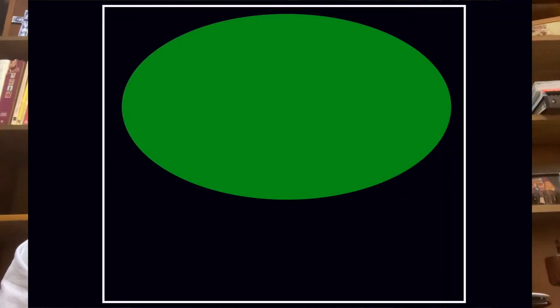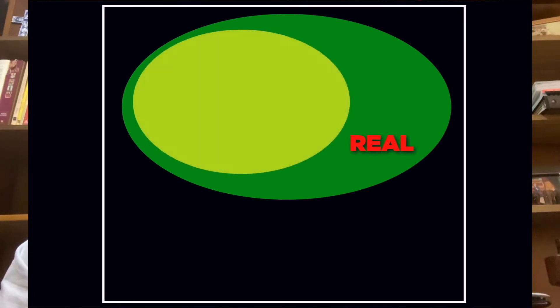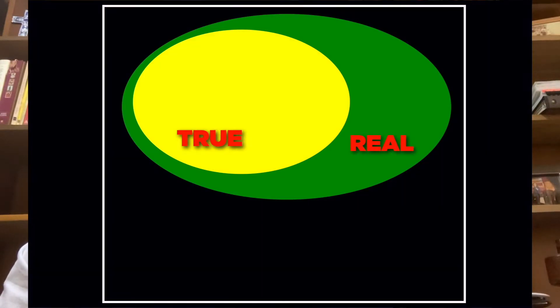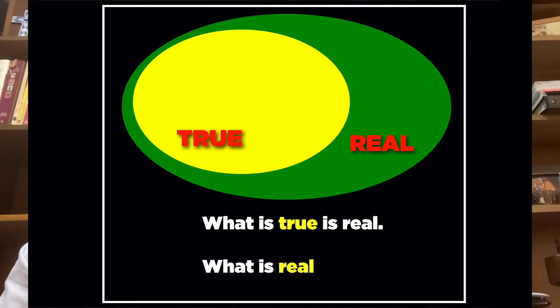This brings us to an important distinction made possible by critical realism — a distinction between two concepts that are often mistaken as synonymous and identical: what is real and what is true. Thanks to the distinction between the perceptual and causal criteria of reality, we now know that what is true is real, because it can make a difference and have an effect. But what is real is not necessarily true — just because something can make a difference does not mean it's true.